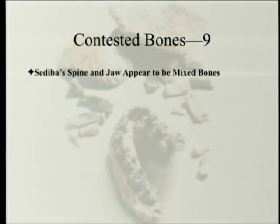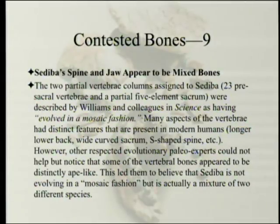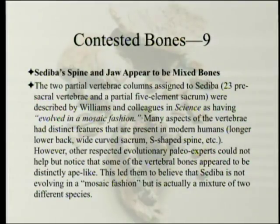Sediba's spine and jaw appear to be mixed bones. The two partial vertebral columns assigned to sediba — 23 presacral vertebrae and a partial five-element sacrum — were described as having evolved in a mosaic fashion, with many aspects of the vertebrae having distinct features present in modern humans: longer lower back, wide curved sacrum, S-shaped spine. However, other respected evolutionary paleo experts noticed that some vertebral bones appear distinctly ape-like, leading them to believe sediba is actually a mixture of two different species.